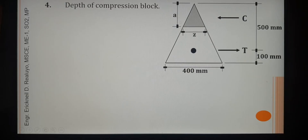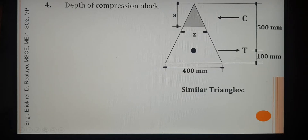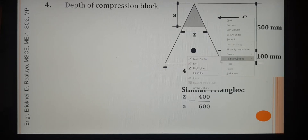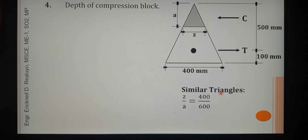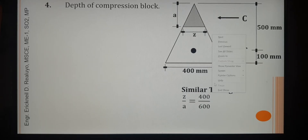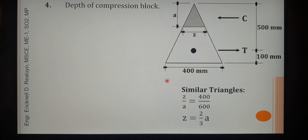Let us get the relationship between A and Z using similar triangles. Taking base-to-height ratios: referring to the smaller triangle, then referring to the larger triangle — the entire beam has base 400 and total height 600. Simplifying, we get Z is equal to two-thirds of A.